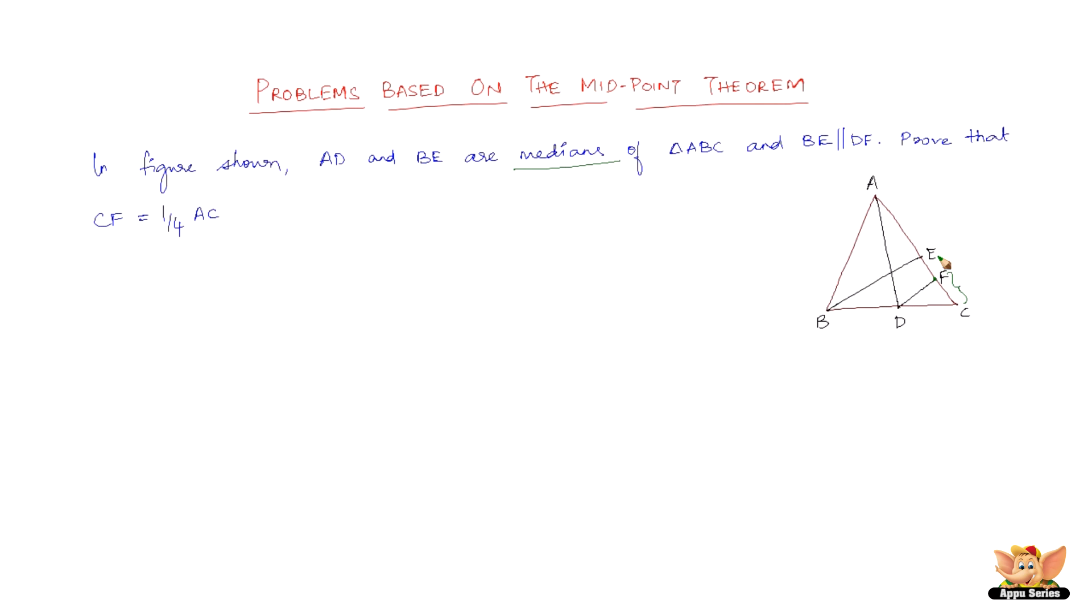We need to declare that F is the midpoint of CE because the line drawn through the midpoint of one side of a triangle and parallel to another side bisects the third side. That is the converse of the midpoint theorem.